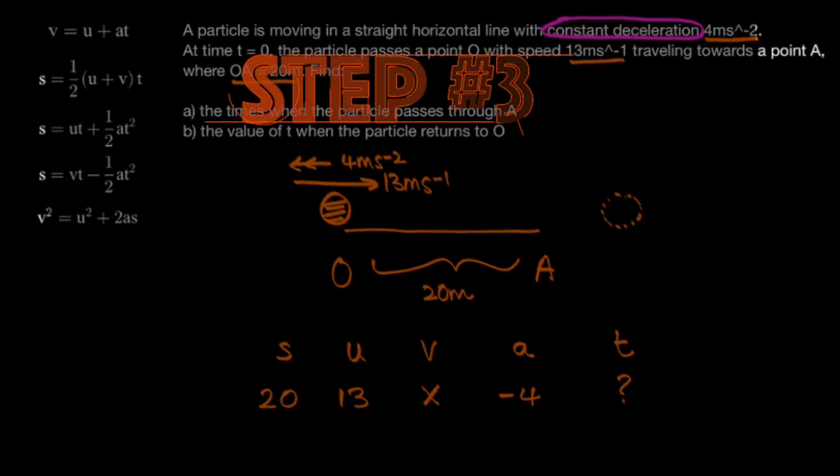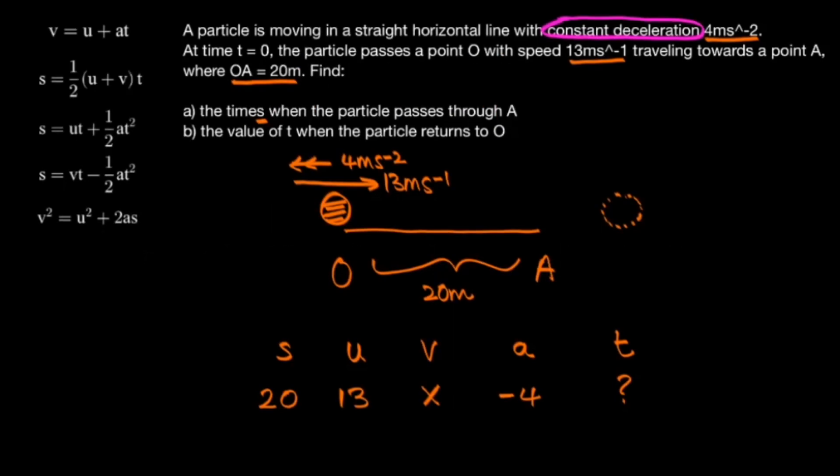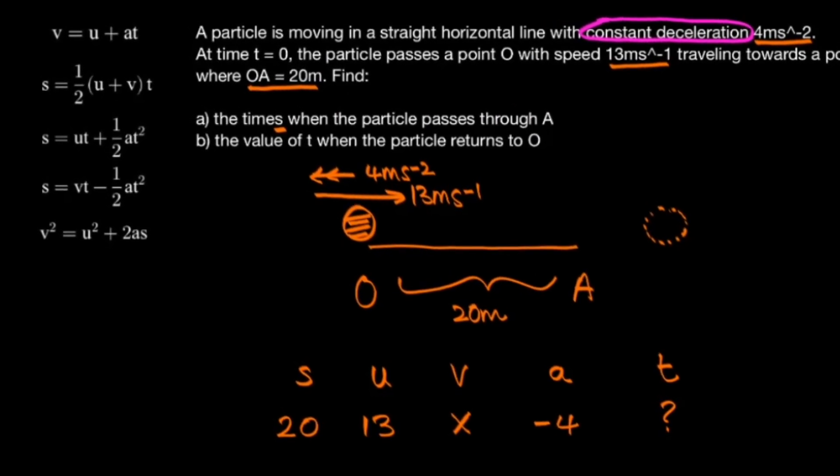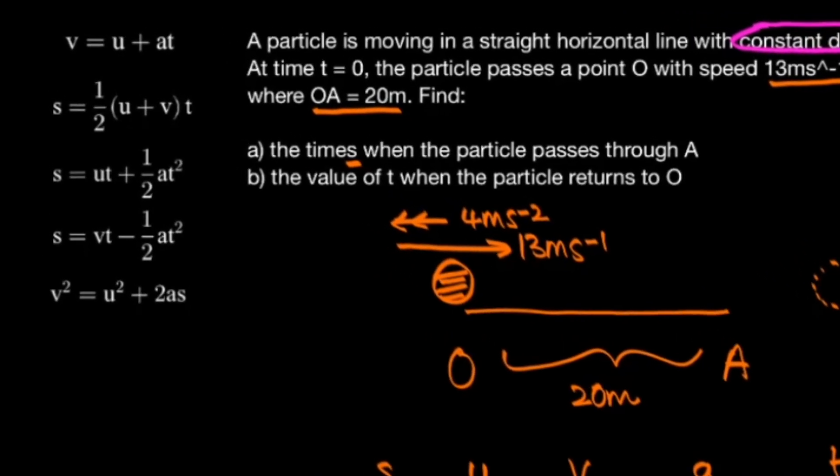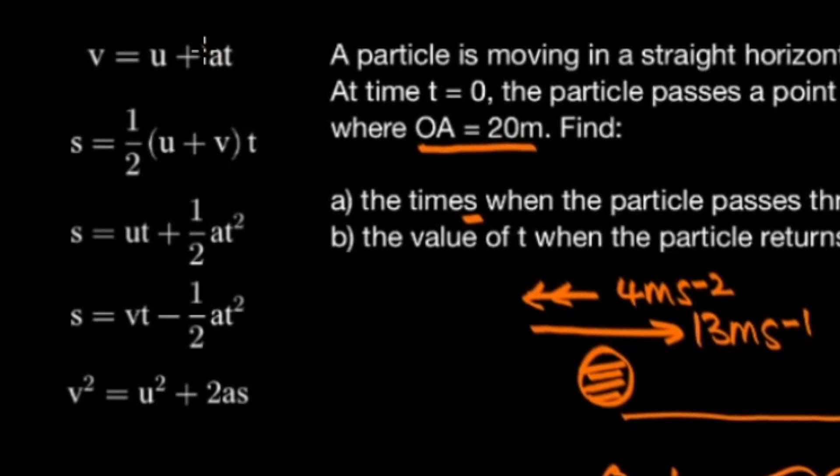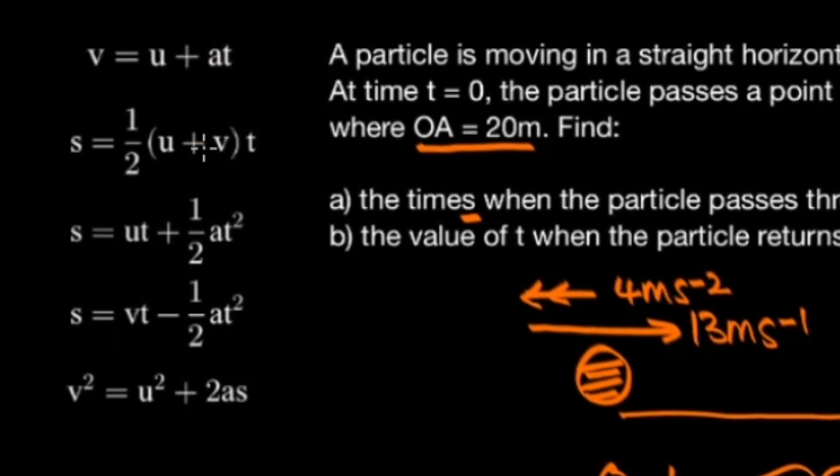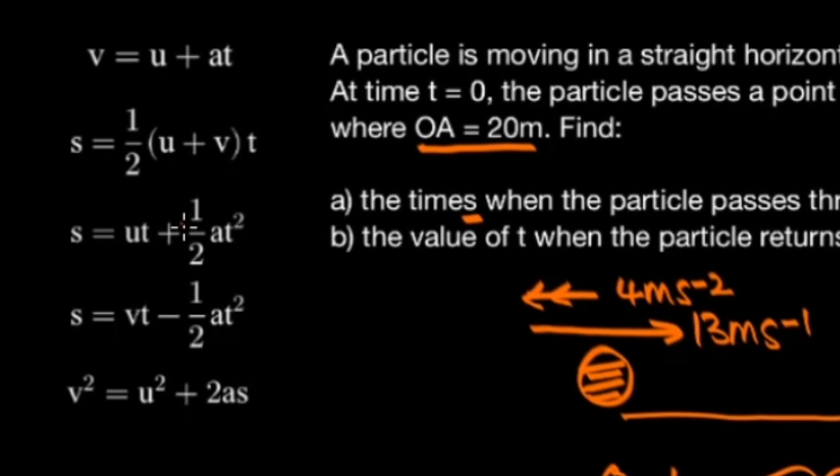And so this brings us to our third and final step, and that is to pick the right equation. So notice how in all of the equations one of the letters is omitted. In the first equation there's no S. In the second equation there's no A. In the third equation there's no V, and so on.